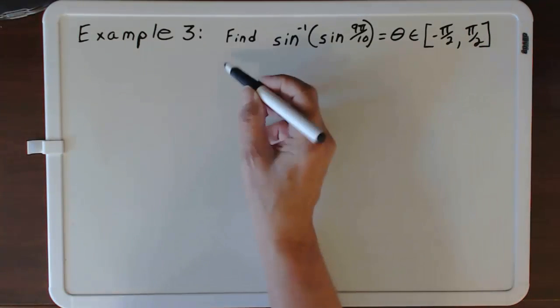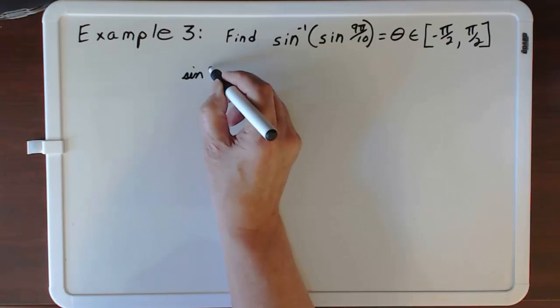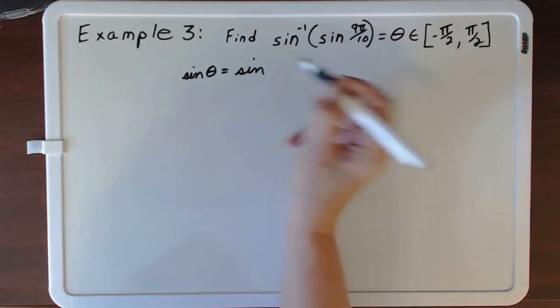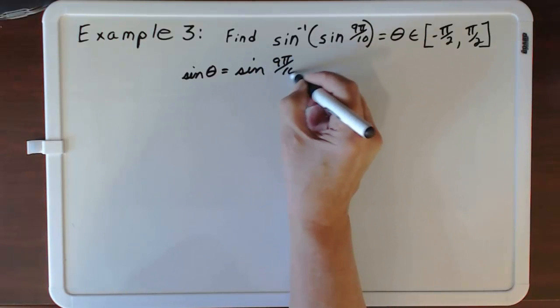this is equivalent to saying that the sine of theta equals the sine of 9π over 10.